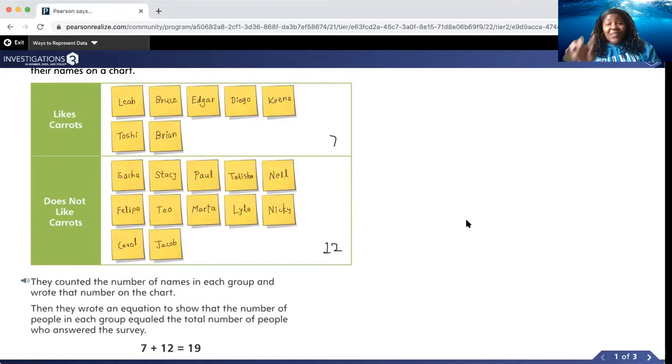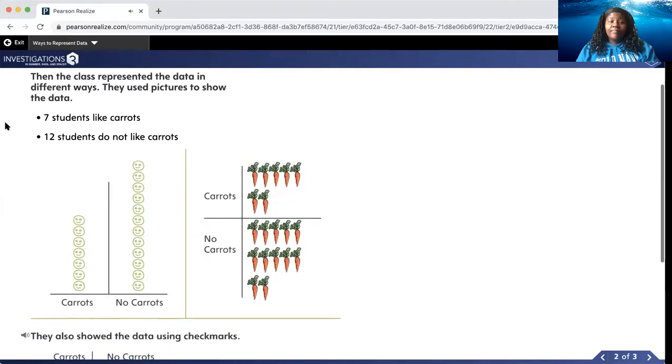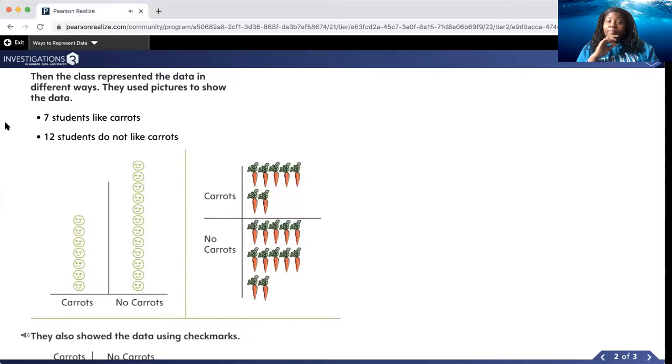Let's check out another way that they represented their data. Ways to represent data. Then the class represented the data in different ways. They used pictures to show the data. Seven students like carrots. Twelve students do not like carrots.